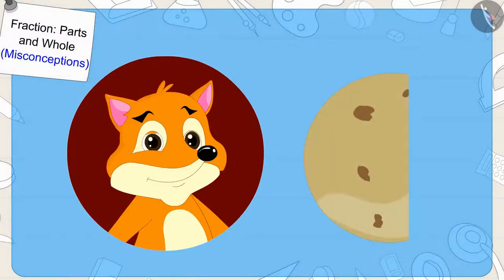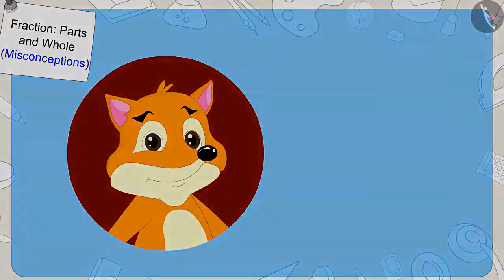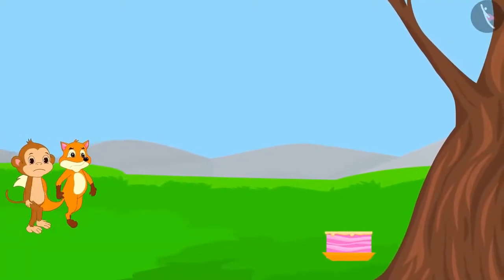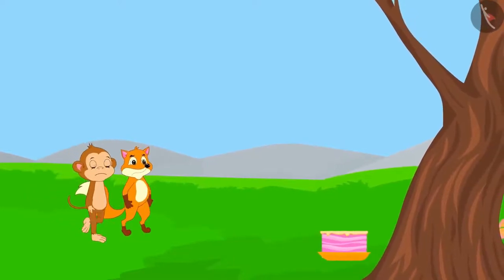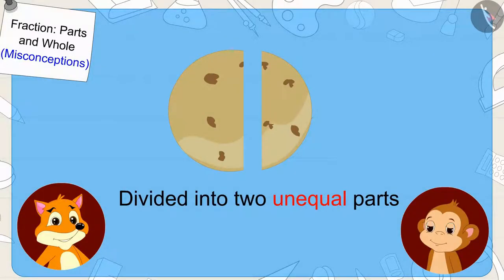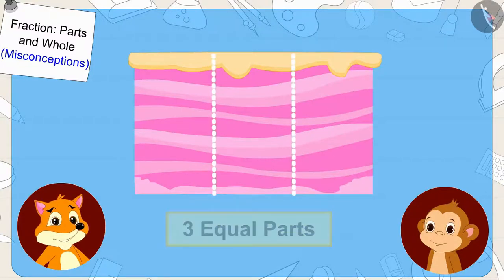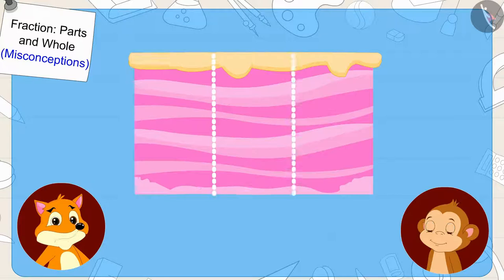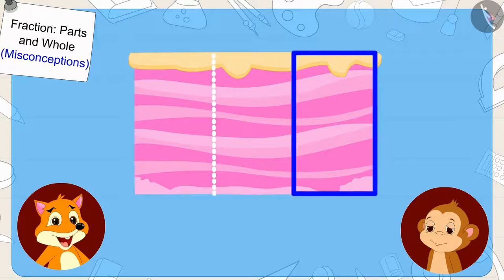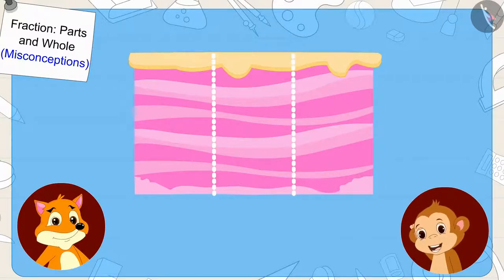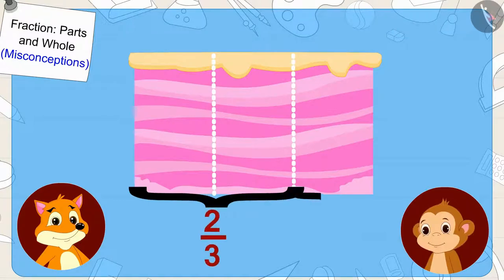The fox cleverly ate the larger piece of chapati. Now, while searching for the way out, they found a rectangle-shaped cake. The cake was quite small. Babban understood that the fox had divided the chapati in unequal parts, so this time he told the fox that she would have to make equal parts of the cake. The fox agreed and split the cake into three equal parts. The fox told Babban she would eat two-thirds of the cake and Babban will eat one-third. When Babban could not understand, the fox wrote it in the form of a fraction.